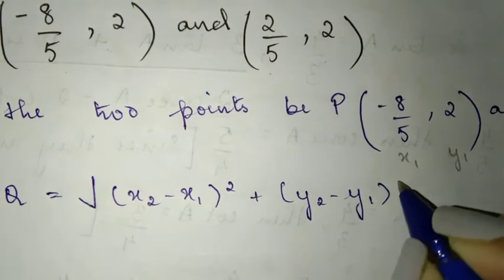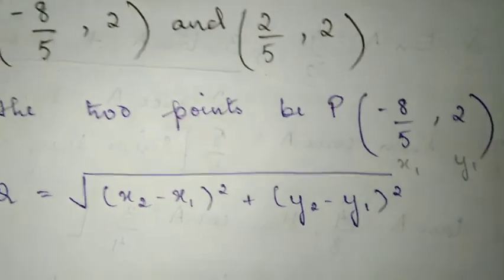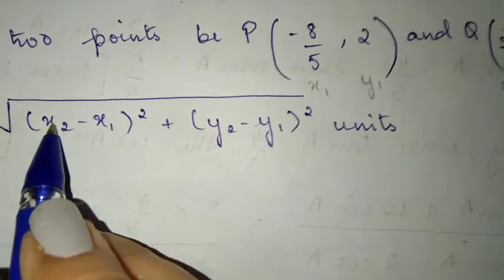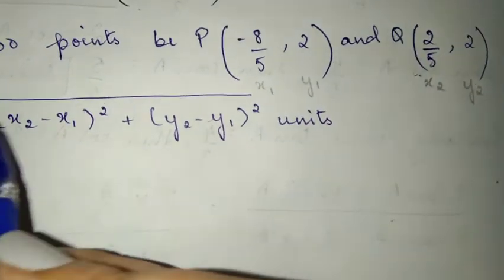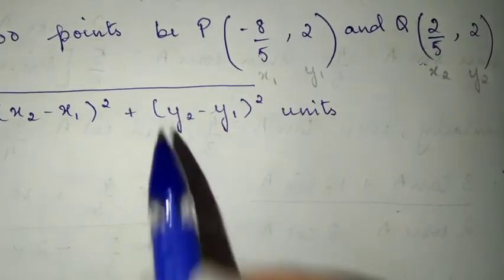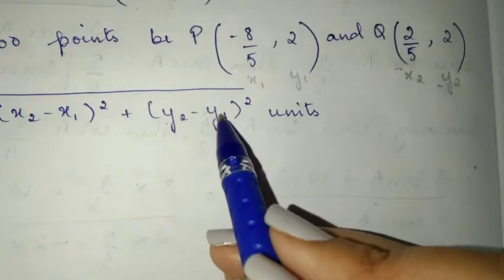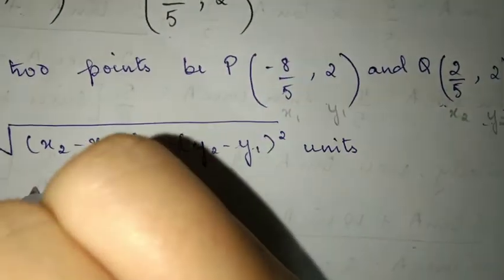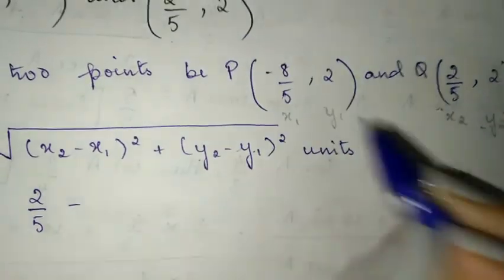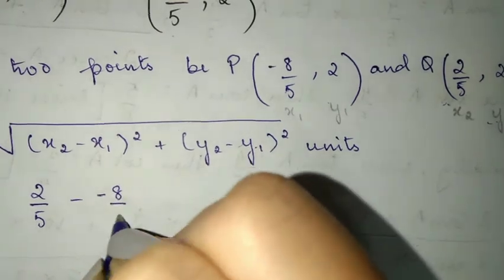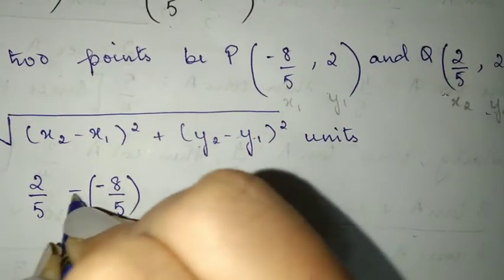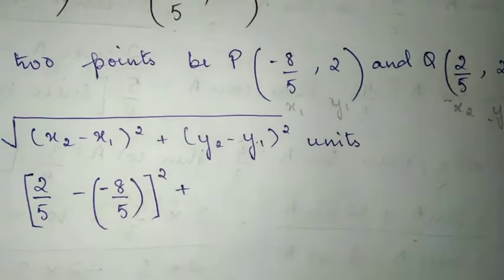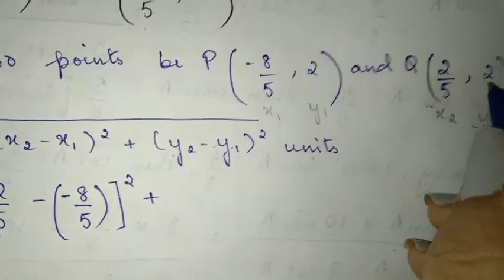Write PQ equal to root over x2 minus x1 whole square plus y2 minus y1 whole square — don't forget to write the units. Now we substitute: x2 is 2 by 5, x1 is minus 8 by 5, y2 is 2, and y1 is 2. So we are going to substitute these values in the formula.